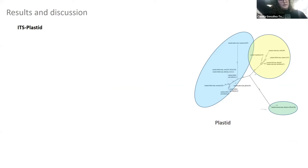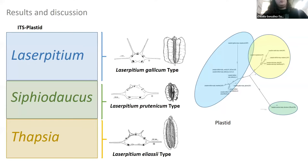On the other hand, the ITS and plastid data revealed the existence of three basic groups within Laserpitium sensu lato in the Iberian Peninsula. One would be two species that would belong to Laserpitium, then we have one taxa within Siphidaucus, and we have another three within Thapsia, two of which will have this type of fruit and another completely different type of fruit.